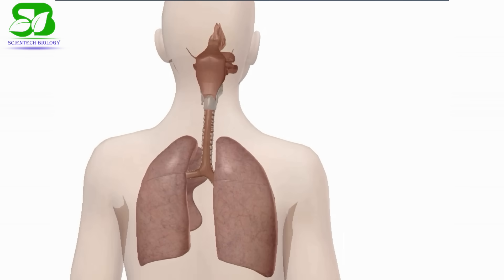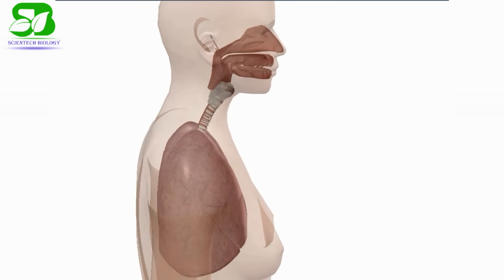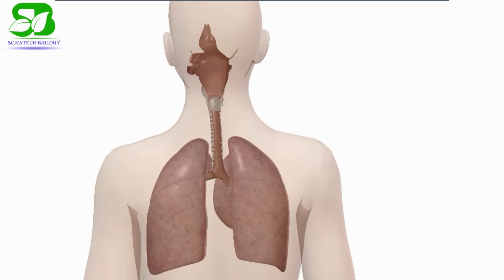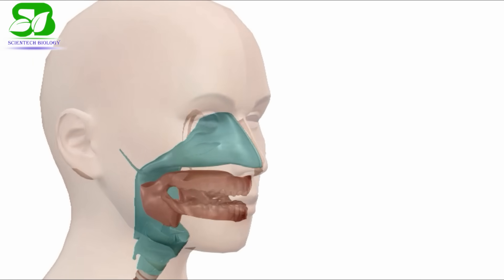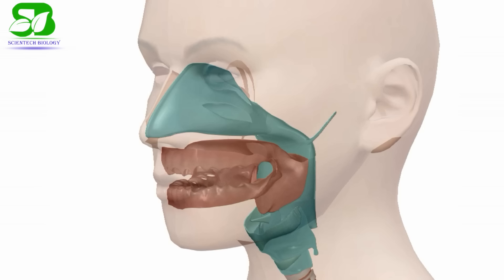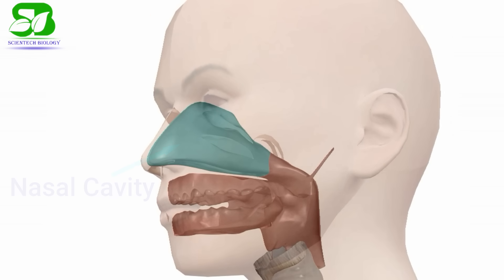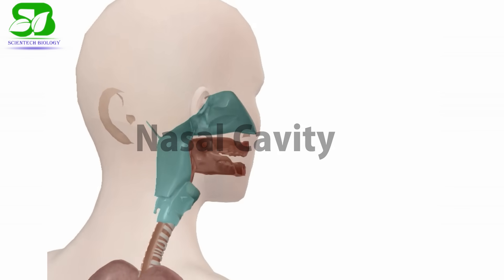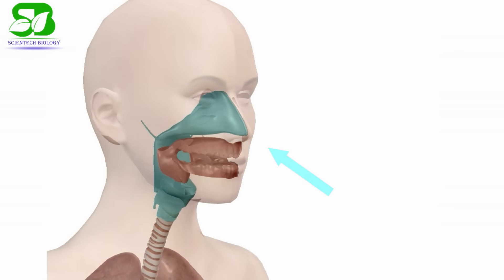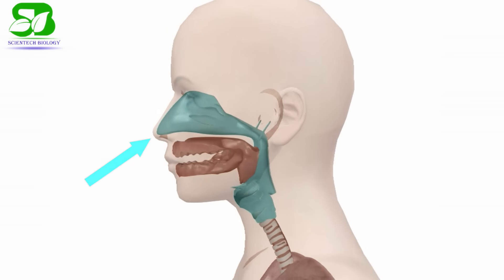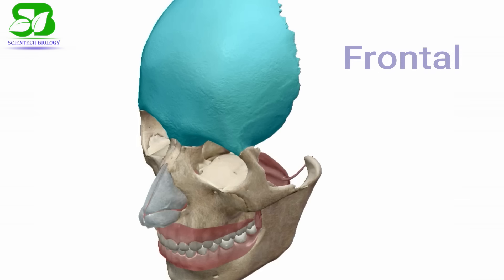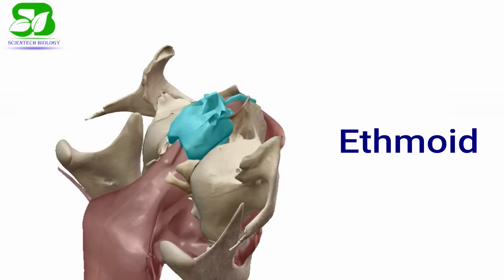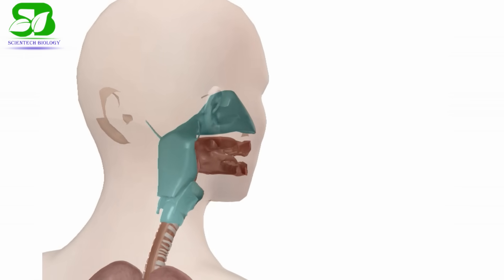The human respiratory system has two parts: the upper respiratory system and the lower respiratory system. The upper respiratory system consists of the nasal cavity, pharynx, and larynx. Air entering the nasal cavity flows through the passage created by the superior, middle, and inferior nasal conchae. The frontal, maxilla, nasal, ethmoid, and vomer are the five bones of the nasal cavity that form a framework supporting the nose.